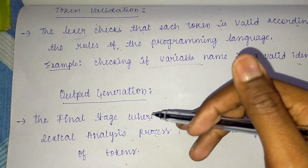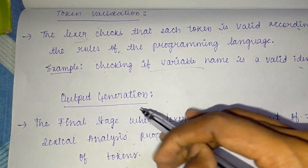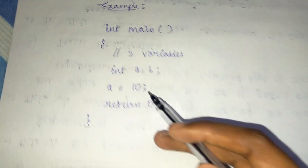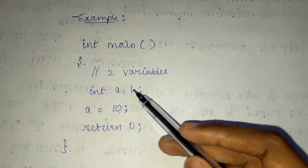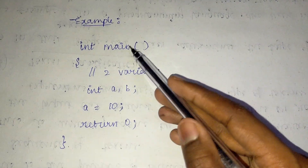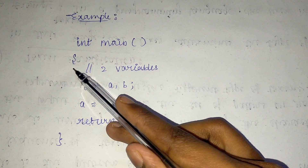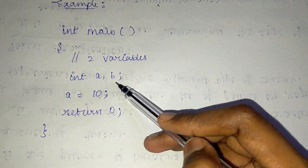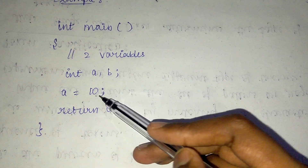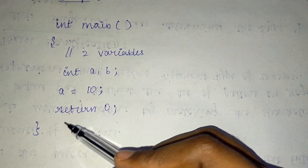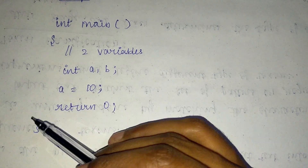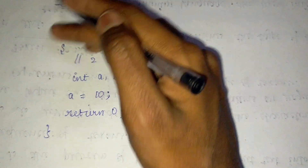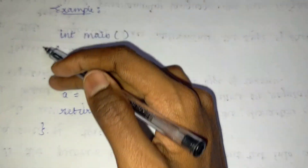As an example, consider 'int main' with opening brackets, two variables a and b, where a is defined as 10, and return 0, followed by closing brackets. This is the example you can remember.